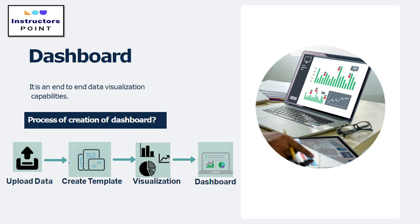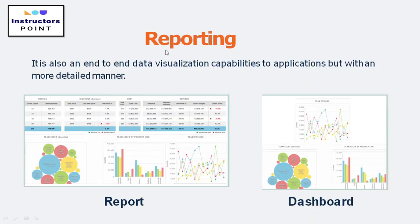A report is similar to a dashboard in providing end-to-end visualization capabilities, but in a more detailed manner. In a dashboard you have multiple graphs that users can analyze visually, but in a report users can get deeper information about what each graph represents. For example, a graph showing hotel occupancy detail can be analyzed visually on a dashboard, but a report provides the full detailed information and visualization breakdown.